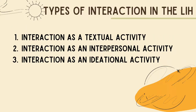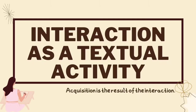Miss Kagara will give you the features and examples of the long interaction hypothesis according to its types. The first type of interaction is interaction as a textual activity. This refers to the modification of one's speech phonologically, morphologically, lexically, and syntactically in order to maximize chances of mutual understanding and to minimize instances of communication breakdown. Studies on interaction as a textual activity show that interactional modifications help learners become aware of form-meaning relationships.